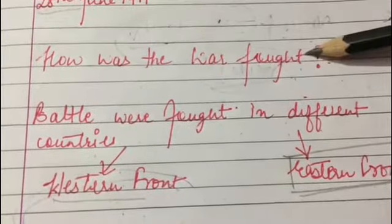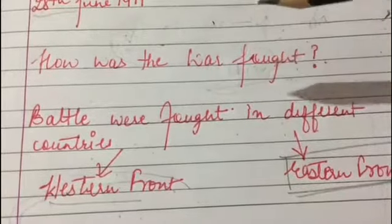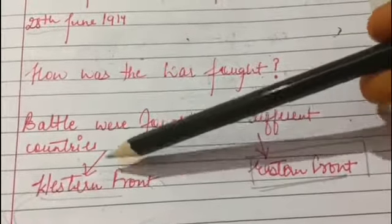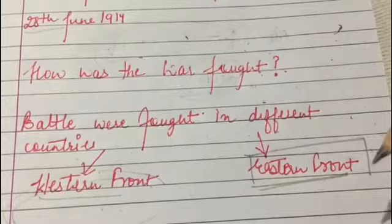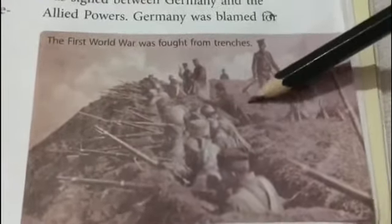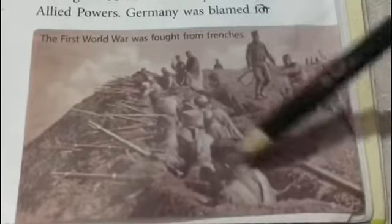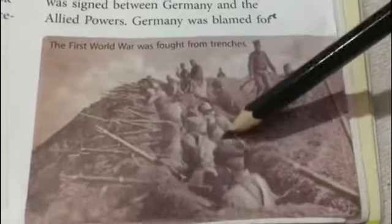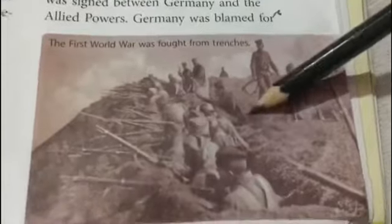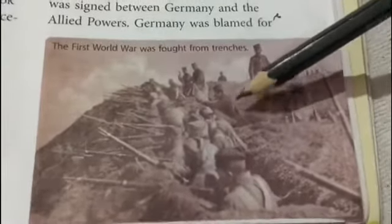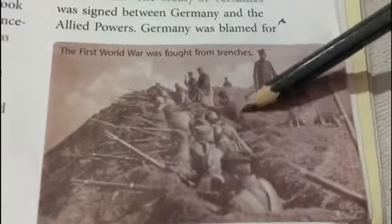Battles were fought in different countries. In Europe, the fighting took place along the western front and the eastern front — France and Belgium were on the western front and Russia was on the eastern front. As you can see in this picture, the war was mostly fought from trenches, where soldiers dug open tunnels in the ground, hid in them, and fired from them. Machine guns, tanks, and poison gas were used for the first time. German submarines called U-boats sank many ships of the Allied Powers.